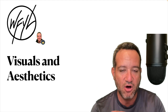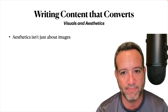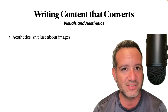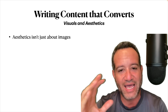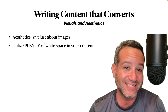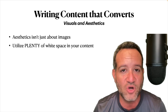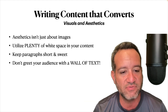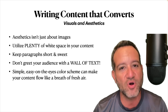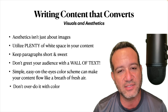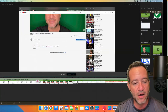Visuals and aesthetics — it's kind of bringing it all home. Aesthetics aren't just about images. You can go overboard with images. Remember what we said at the top: keep it simple. The content itself needs to be king. We don't want to have so many visuals that it's distracting. You utilize plenty of white space in your content. You want the text and content to flow and breathe. You don't want a wall of text. Keep your paragraphs short and sweet. Don't greet your audience with a wall of text. Simple, easy on the eyes. Color scheme can make your content flow like a breath of fresh air — don't overdo it with color, keep it simple, complimentary is the goal, not overpowering.